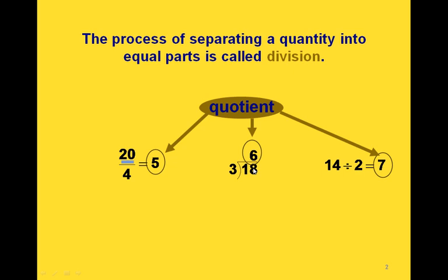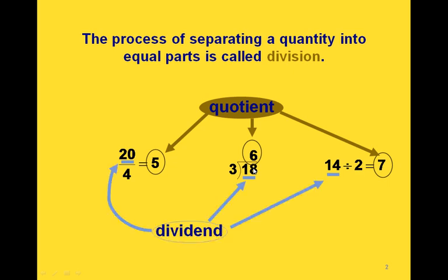Now if we look at the number that we're dividing in each one of these — so the 20, the 18, and the 14 — those are called dividends. And finally, if we look at the numbers that we're dividing by — so the 4, the 3, and the 2 — those are called divisors.